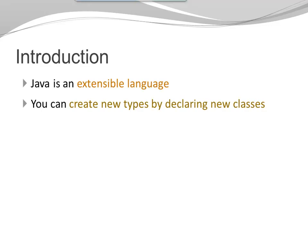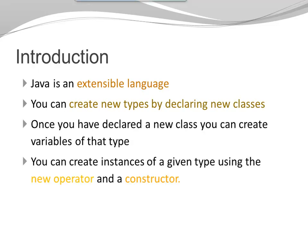Java is an extensible language. You can create your own types by declaring new classes. Once you have declared a new class, you can create variables of that type. You can also create instances of a given type using the new operator in combination with the constructor.